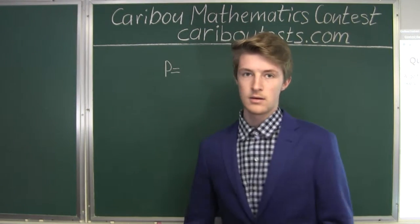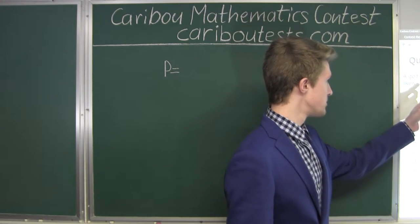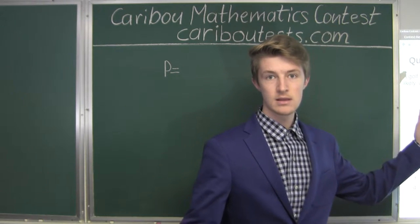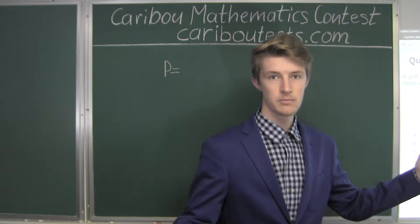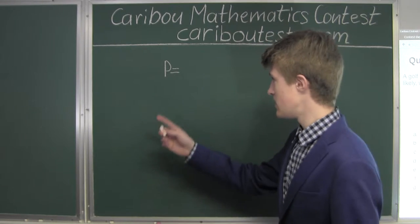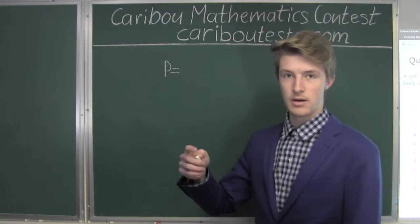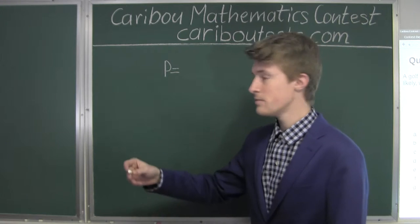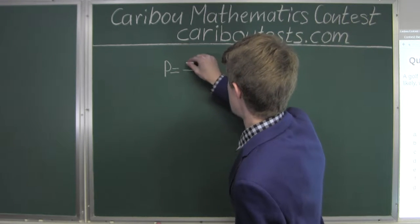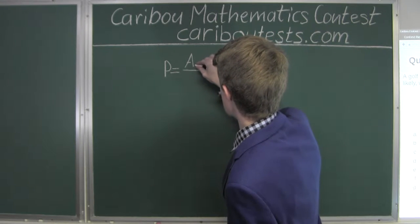Now we want to see what is the probability that this ball lands less than 2 meters from the hole. So we must take the area of the smaller circle, so we will have A of a smaller circle,